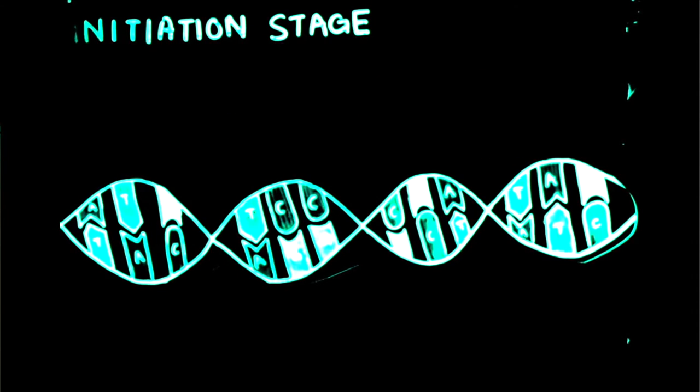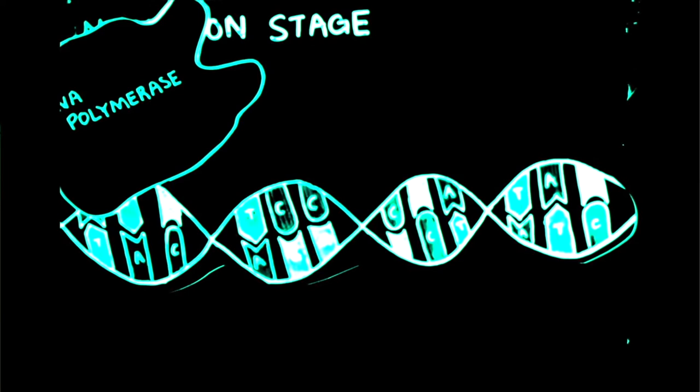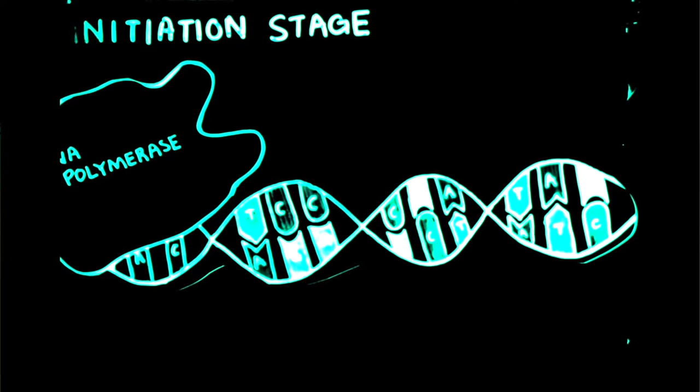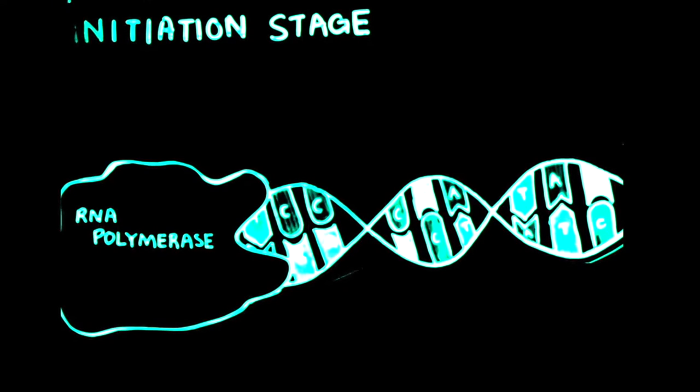During the initiation stage, the RNA polymerase uses the promoter region as a binding site. Binding results in the DNA double helix structure to unwind and open up.